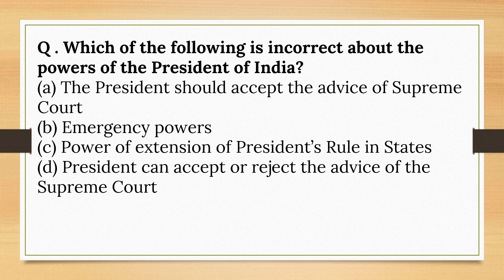Which of the following is incorrect about the powers of the President of India? The President can accept or reject the advice of the Supreme Court — this is a power. Emergency powers are also given. However, the power of extension of President's rule in a state is NOT given to the President — it is given to the Parliament of India; only Parliament can extend the President's rule in a state. So the correct option is Option C.